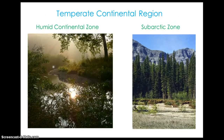There are two zones in the temperate continental region: the humid continental and the subarctic. In these climates, there are extreme temperature variations. Humid continental has hot summers and cold winters — we live here. In the subarctic, they have short, cool summers and long, cold winters, as in Alaska and central Canada.